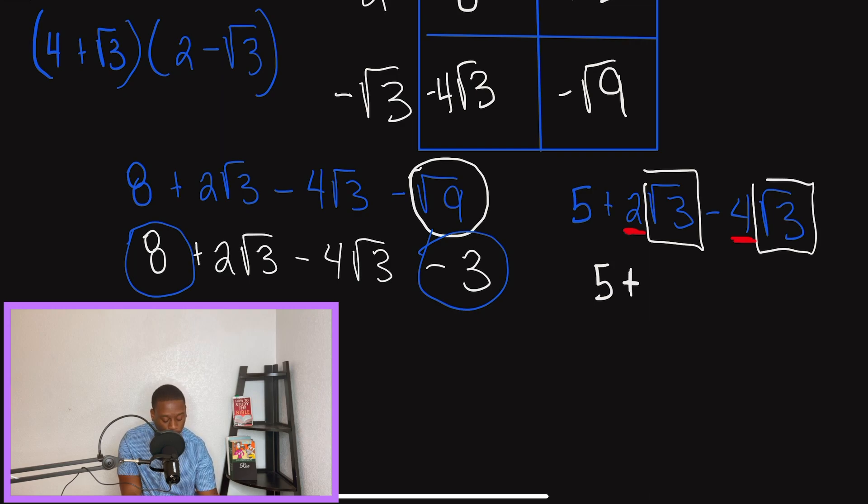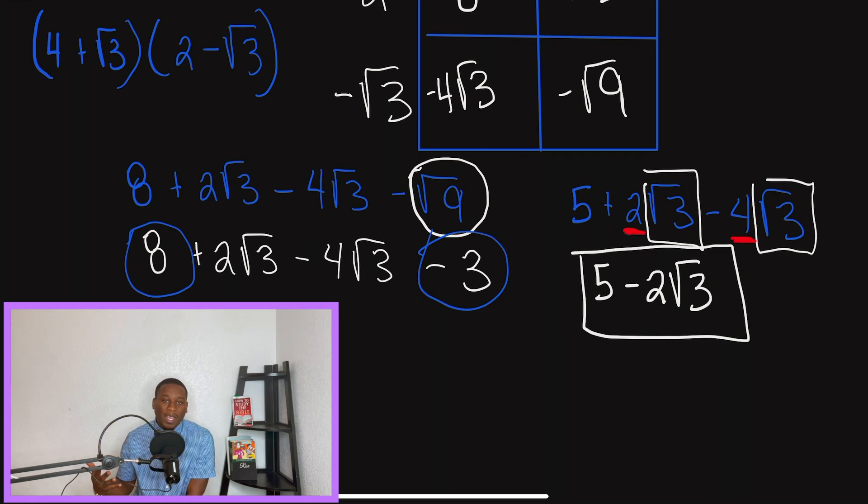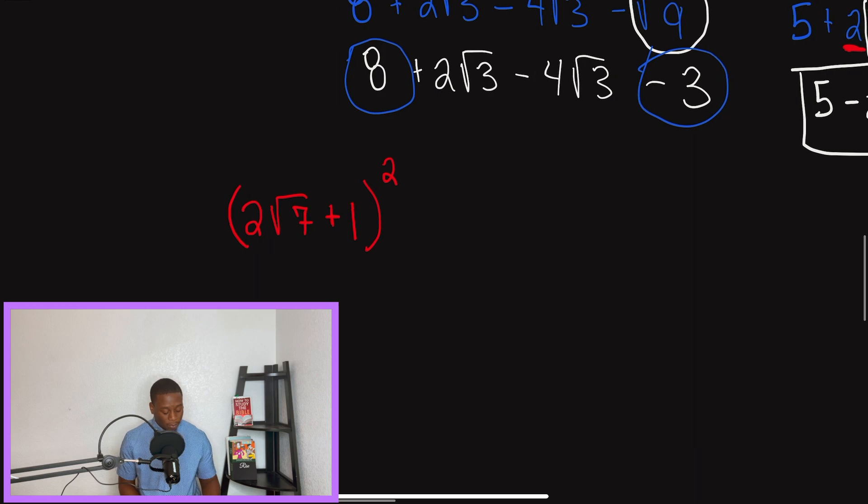So in this problem, I have 5 plus, and just remember, 2 minus 4 is going to give me a negative 2. So we're going to have 5 minus 2. Then now the question is, what do we do with radical 3? Do we subtract them? Do we add them? Do we multiply them? This is what we do. We're going to keep it the same like a variable. So what that means is our final answer should be 5 minus 2 radical 3. And the reason why, guys, is because the radicals are going to act like a variable. It's the same thing as 4x plus 3x. It's the same concept.